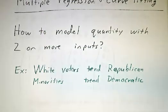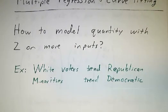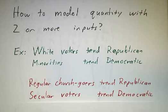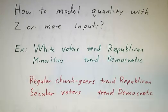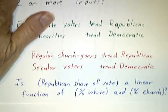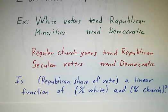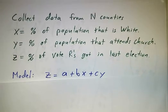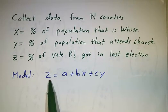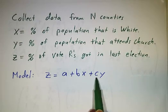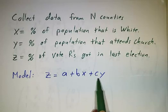We'll take a political example. It turns out that at least as of 2013, white voters tend to vote Republican while minority voters tend to vote Democratic, and regular churchgoers tend to vote Republican much more than secular voters. So you might try to model how a particular county is going to vote by looking at what fraction of the voters are white and what fraction are churchgoers. You might put up a model saying the percentage of the vote that Republicans get should be some constant plus another constant times the percentage of the population that's white, plus another constant times the percentage that regularly attends church.